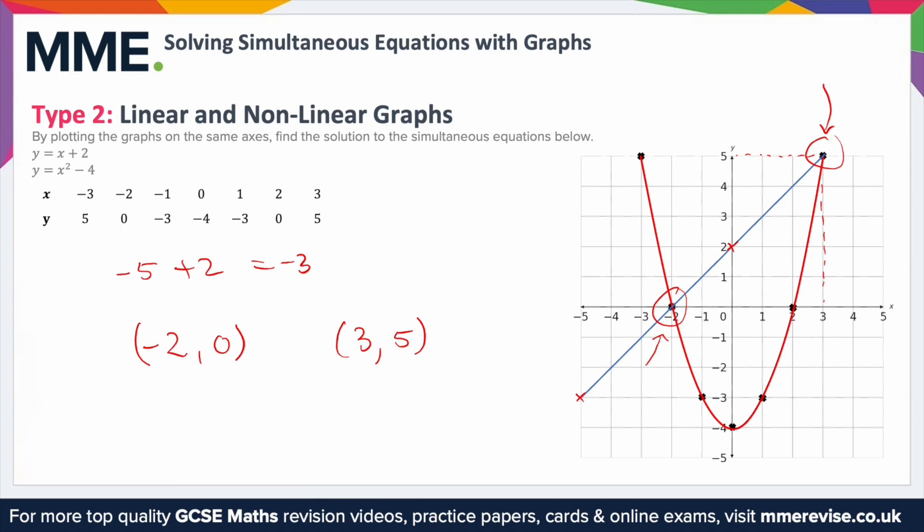Straight line, you only need two as long as you use a ruler. A quadratic, use as many as you can just so you make sure you are as accurate as possible.